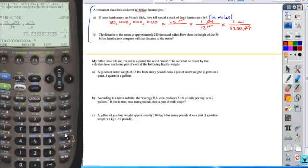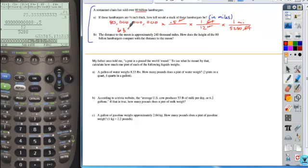but times 0.5. And then divided by 12, and then divided by 5280, and I get my solution of 631,313.13 continuing miles.